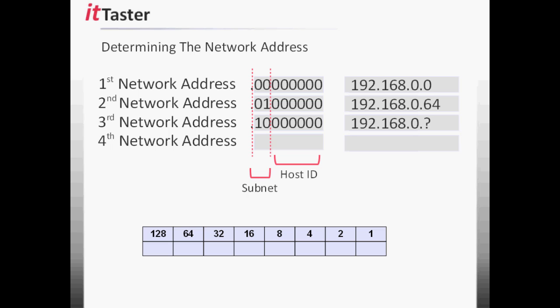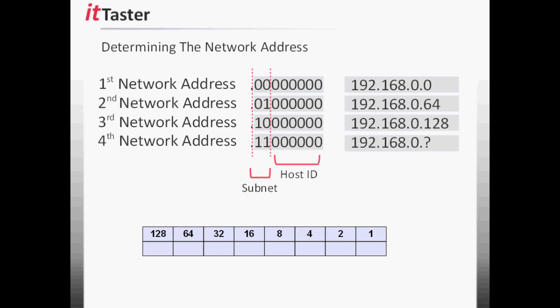We need to do the same for the third subnet. Transfer the octet to the binary table and add the values of the first 2 bits: 128 plus 0 equals 128. The network address of the third subnet is 192.168.0.128. And finally the fourth subnet — transferring the octet to the binary table, or simply incrementing the previous network address by 64, we arrive at 192. The network address of the fourth subnet is 192.168.0.192.